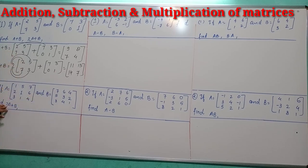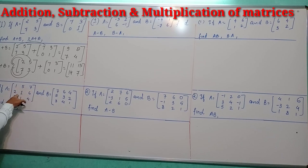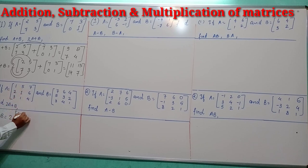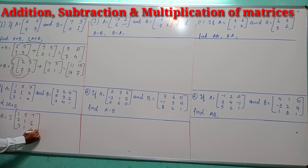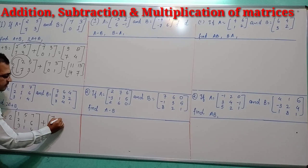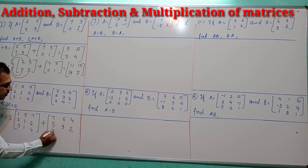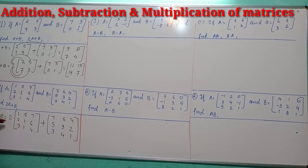Now we will do the addition of a 3 by 3 matrix. A 3 by 3 matrix has 3 rows and 3 columns. We compute 2A plus B where matrix A is [1, 5, 7; 2, 1, 6; 3, 1, 4] and matrix B is [3, 7, 6; 4, 5, 3; 2, 3, 4; 1]. You will have to multiply 2 with each element of matrix A.